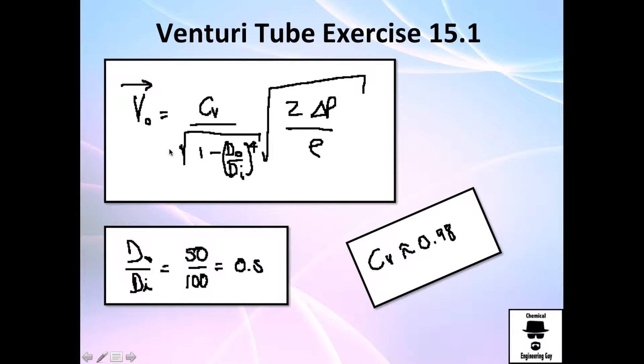They tell you to calculate the velocity in the throat, the velocity of operation of the pipe, and the volumetric flow rate of the pipe. So we use the formula for the Venturi tube. This is the coefficient for Venturi tube, the ratios of diameters, drop in pressure, and the density.